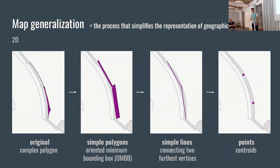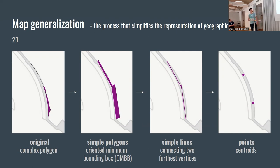A word on map generalization. Map generalization is the process that simplifies the representation of geographical data. Every cartographer uses generalization — as I learned in my first lecture — because the world is too large. You cannot create a one-to-one map of reality. The point of the map is to make it smaller, so you always have a loss of information, and generalization is how you deal with that.